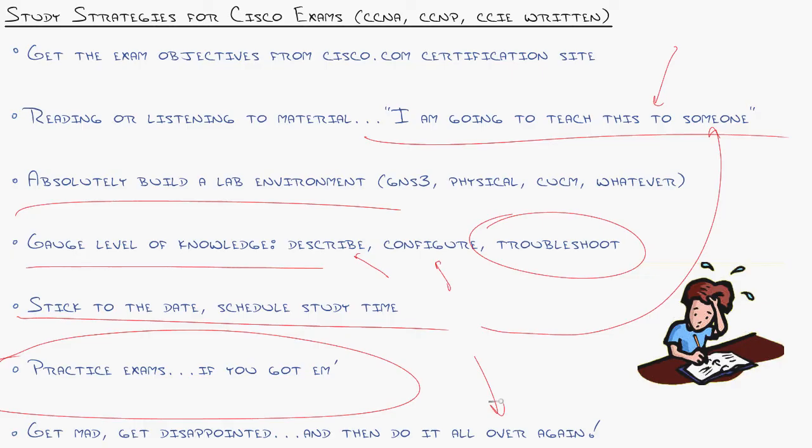Finally, get mad, get disappointed, and then do it all over again. Missing an exam is the worst, but it happens. I've pulled up my transcript. My wife came in once and was looking over my shoulder. She was like, what are you doing? I was like, oh, look at all these exams I've taken. She's like, wow. You know, it's going through her mind, each one of those is $150. But she goes, you failed a lot of exams.